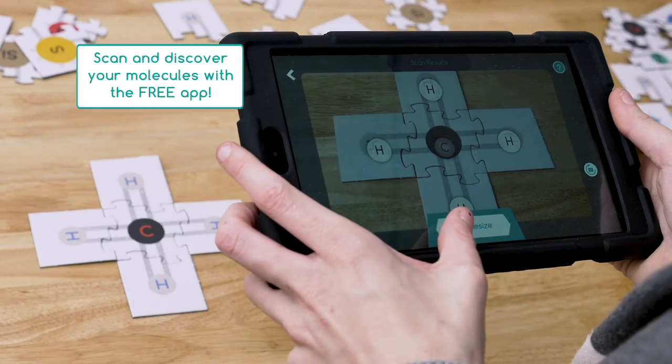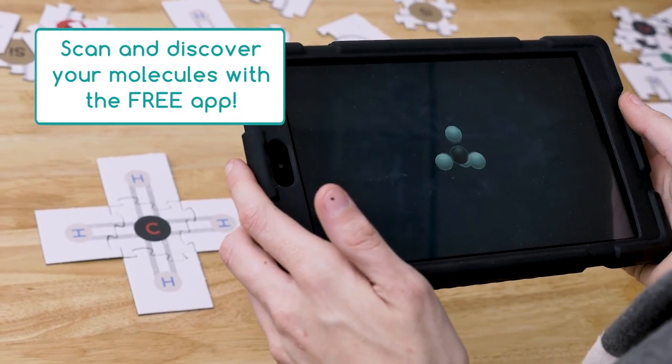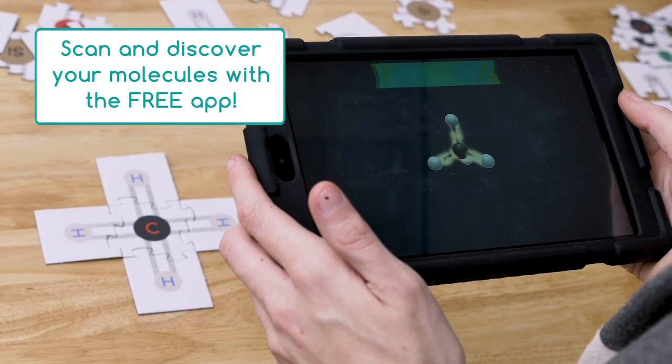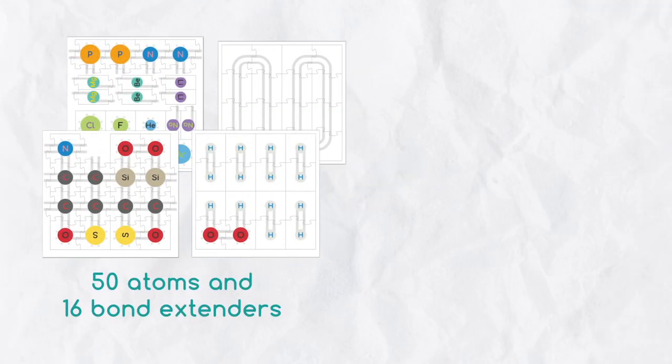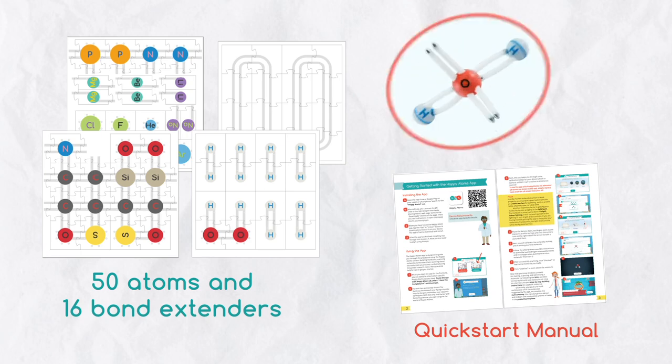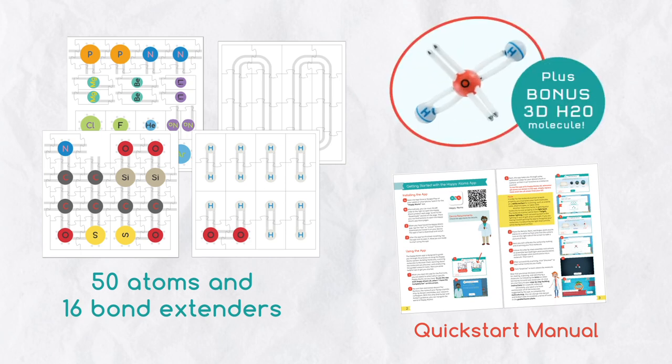Use the free state-of-the-art Happy Atoms app to scan your molecules and learn more about them. This affordable compact kit comes with 50 atoms, 16 bond extenders, a quick start manual, plus a bonus 3D water molecule.